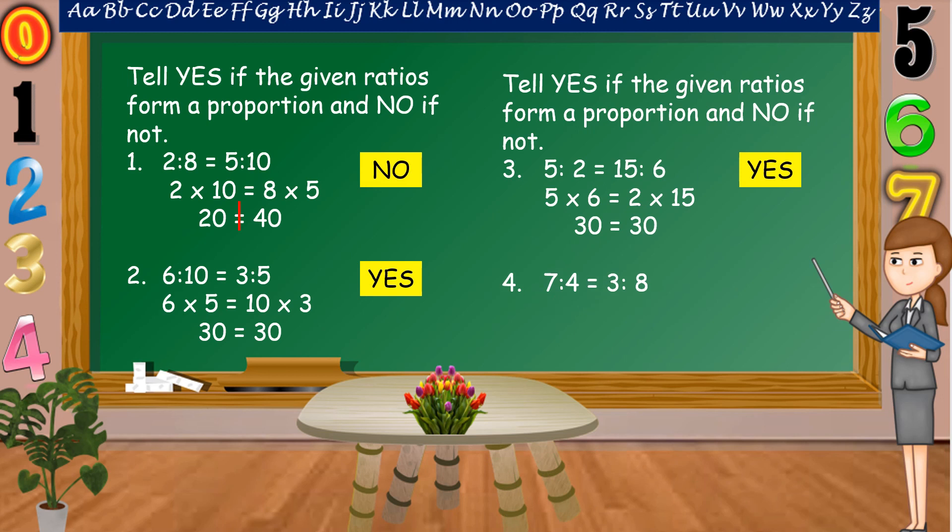Next number, 7 is to 4 as 3 is to 8. Yes or no? Alright, it is no. Why? 7 times 8 is equal to 56. 4 times 3 is equal to 12. 56 is not equal to 12. So, these two ratios are not proportion.